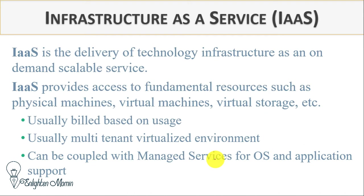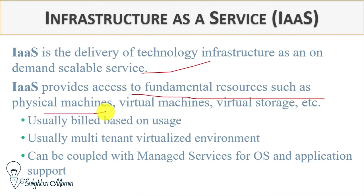Infrastructure as a Service is the delivery of technology infrastructure as on-demand scalable services. IaaS provides access to fundamental resources such as physical machines, virtual machines, and virtual storage. So infrastructure refers to how many kinds of physical machines, virtual machines, and virtual storage you will need — this is called Infrastructure as a Service.